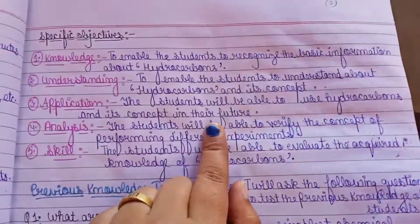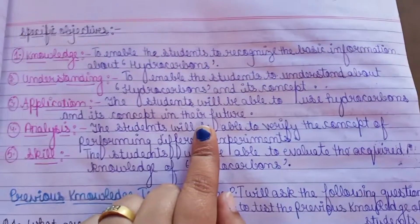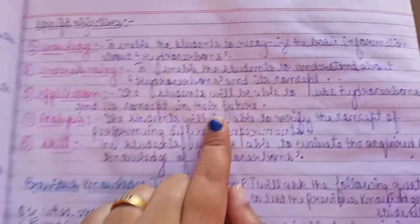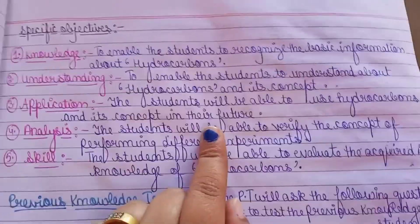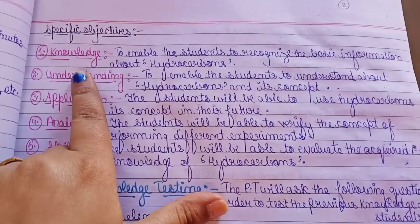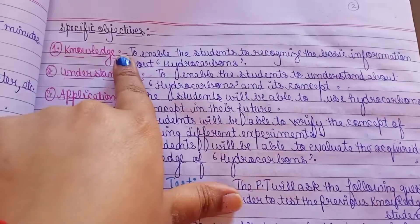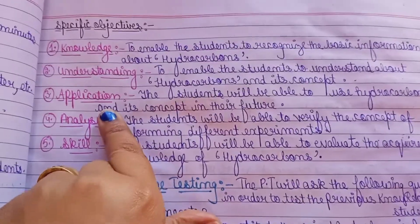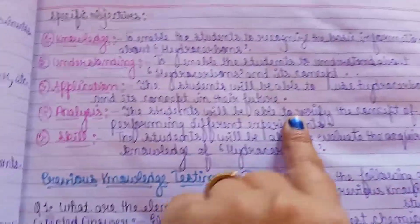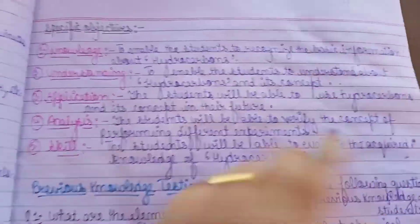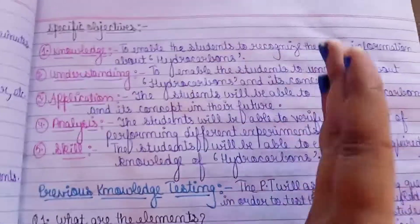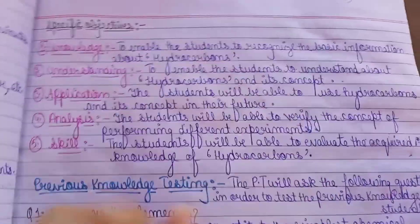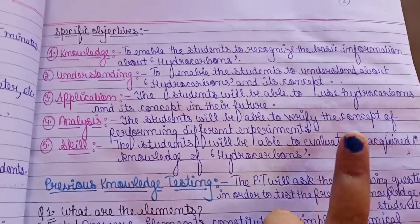Next come specific objectives. After studying, what the students have learned — these are called specific objectives. In specific objectives we use Bloom's Taxonomy: knowledge, understanding, application, analysis, evaluation, and skills. For knowledge, what do we want students to know? For understanding, what should they understand? For application, where should they apply it in the future? We make points for each of these levels.